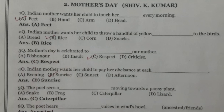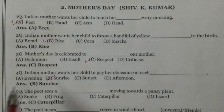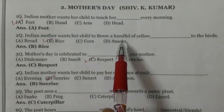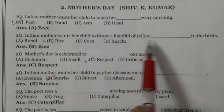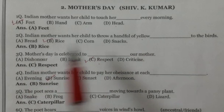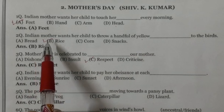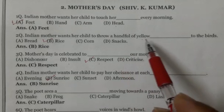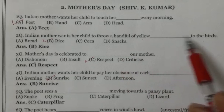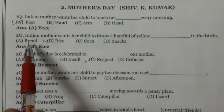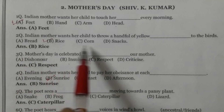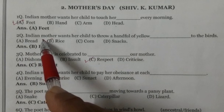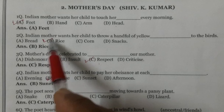Question number 2: Indian mother wants her child to throw a handful of yellow dash to the birds. Indian mother chahti hai ke uska bachcha panchiyan nu muthi bhar yellow rice pai sake. Four options: bread, rice, corn, snacks. The right option is (b) rice.